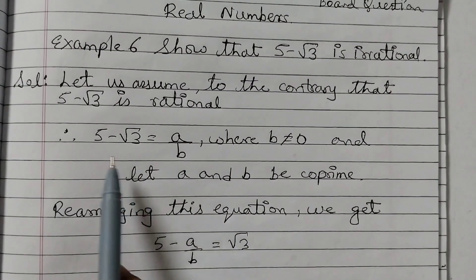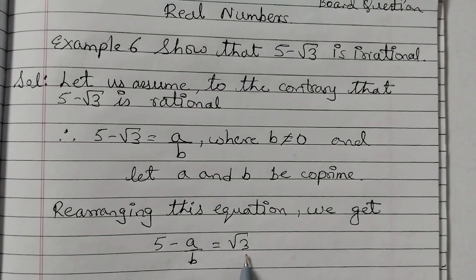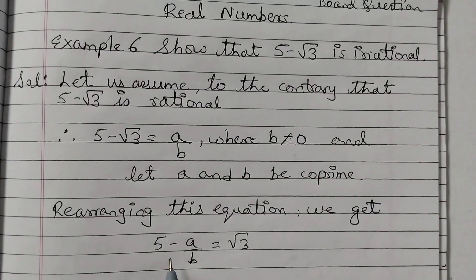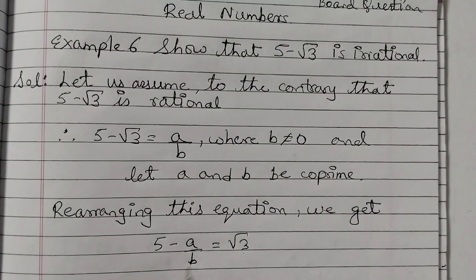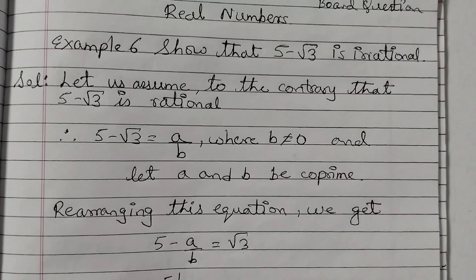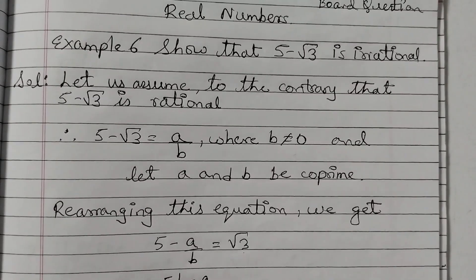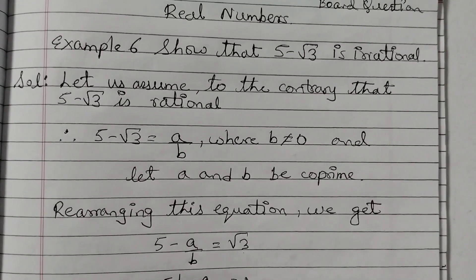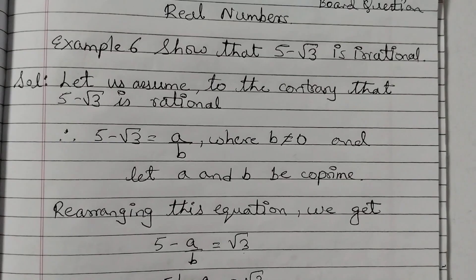I have taken A upon B to the left side and square root of 3 to the right side. So now square root of 3 is equal to 5 minus A upon B or if you take the LCM, you will get it as 5B minus A upon B that is equal to square root of 3.